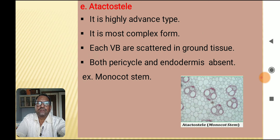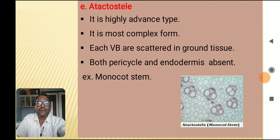The last type is atactostele. It is a highly advanced and most complex form. Each vascular bundle is scattered in ground tissue, and both pericycle and endodermis are absent. It is a characteristic feature of the monocot stem.